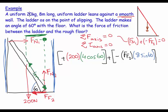This is tending to cause a clockwise motion about my turning axis. It doesn't cause it, but it's tending to cause it. Clockwise torques are always called negative. Those two added together equals zero. So rearranging, Ff2 is equal to 200 times 4 cosine 60 over 8 sine 60.